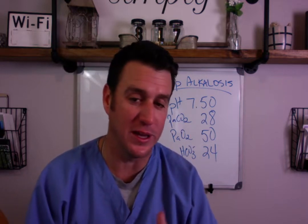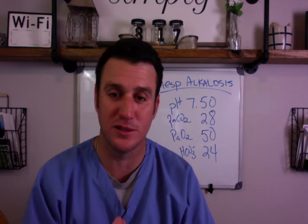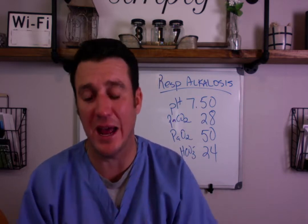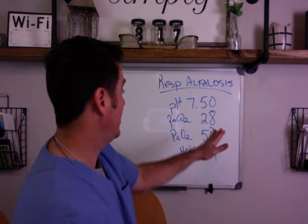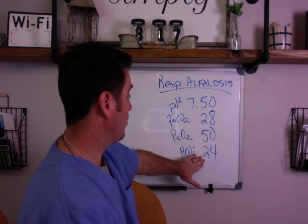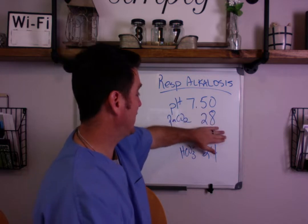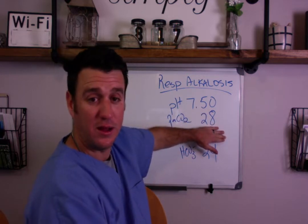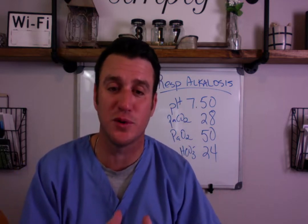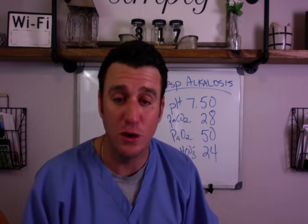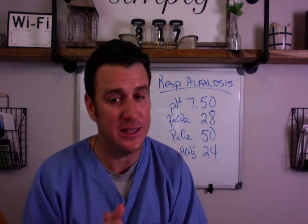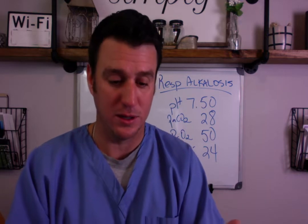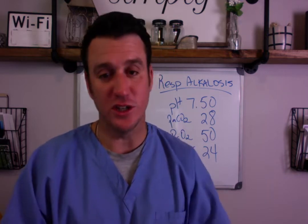Lots of questions keep rolling in about different blood gas treatments — how do we fix this, how do we fix that. Today's video is specifically about respiratory alkalosis. This is when you have a low CO2, a normal bicarb, and a high pH. We don't even have to talk about the PaO2 right now. When you talk about an uncompensated respiratory alkalosis, you're talking about a patient who is acutely hyperventilating at the alveolar level. Lots of things can cause this: hypoxemia, anxiety, pain, just to name a few.